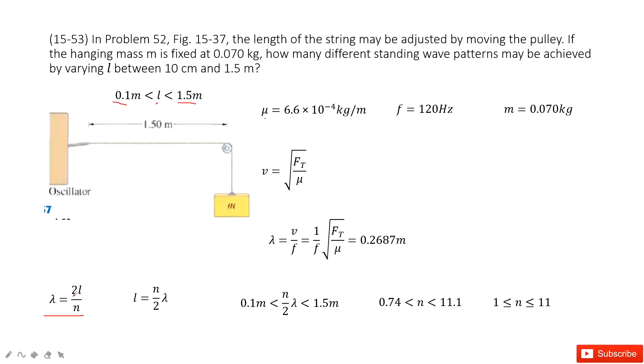The lambda is the wavelength. 2L is just, the L is the distance for these two ends. And n is just how many nodes, how many standing wave patterns.